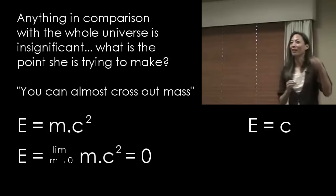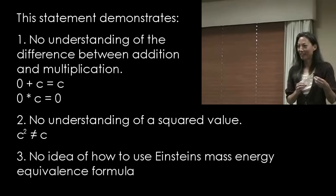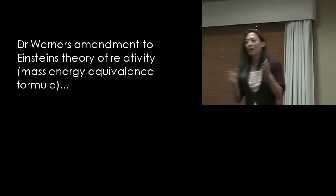Let's see if she gets the same answer. So the formula ends up being energy equals the speed of light. This statement demonstrates no understanding of the difference between addition and multiplication, no understanding of a squared value, and no idea of how to use Einstein's mass energy equivalence formula. Next she's going to claim that God sent Stephen Hawking to validate homeopathy. So God in his infinite wisdom sent him another Einstein called Stephen Hawkings.